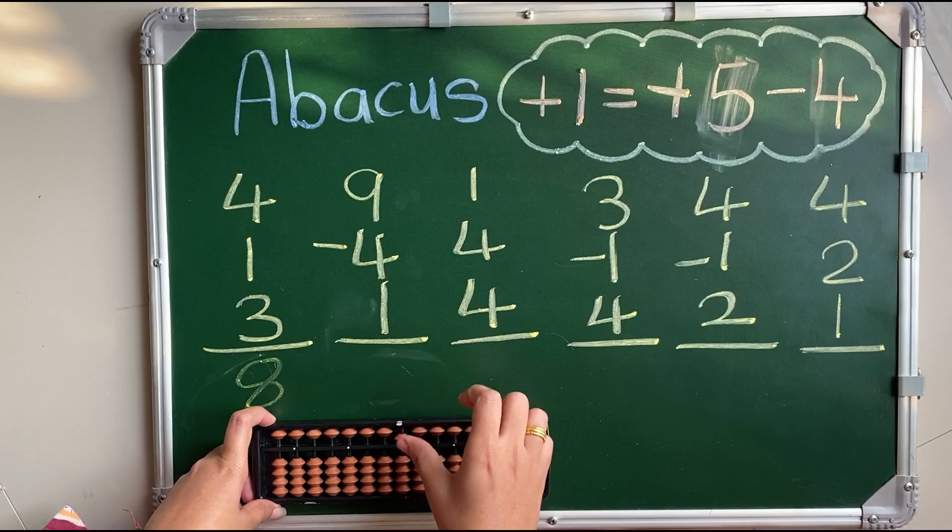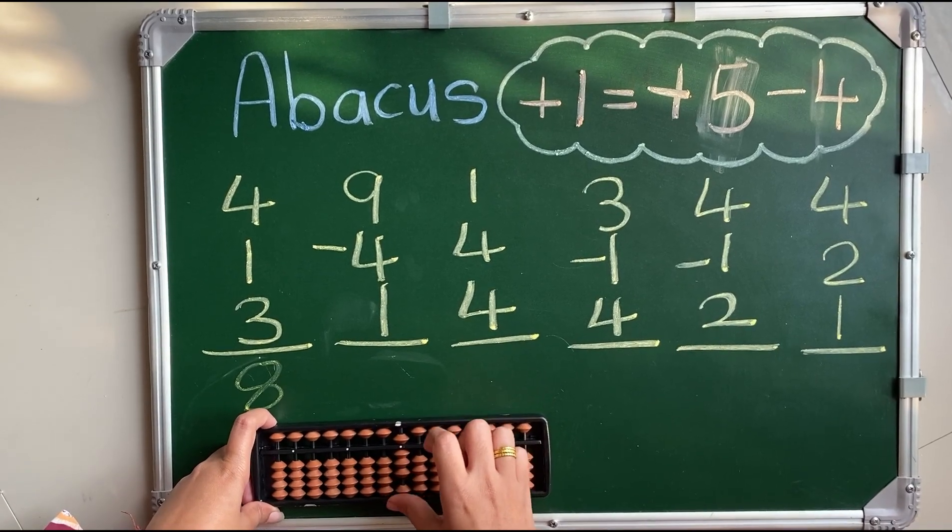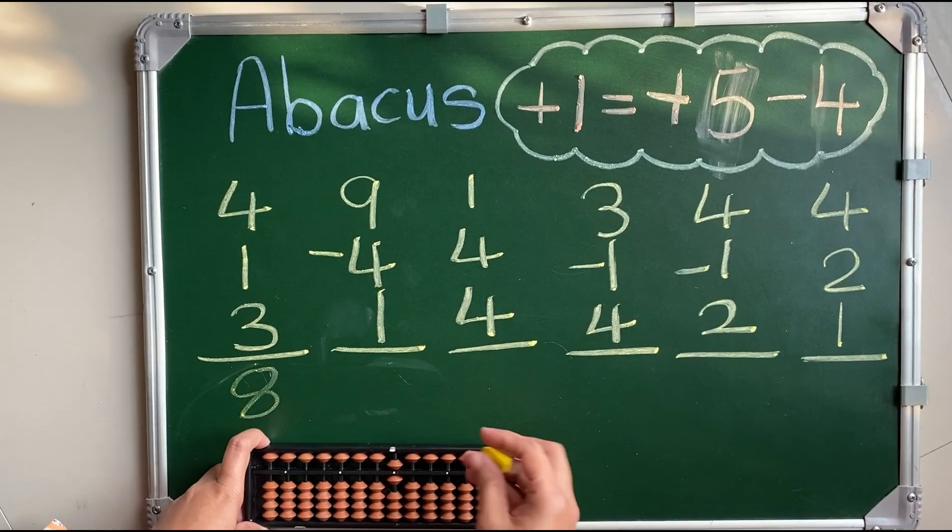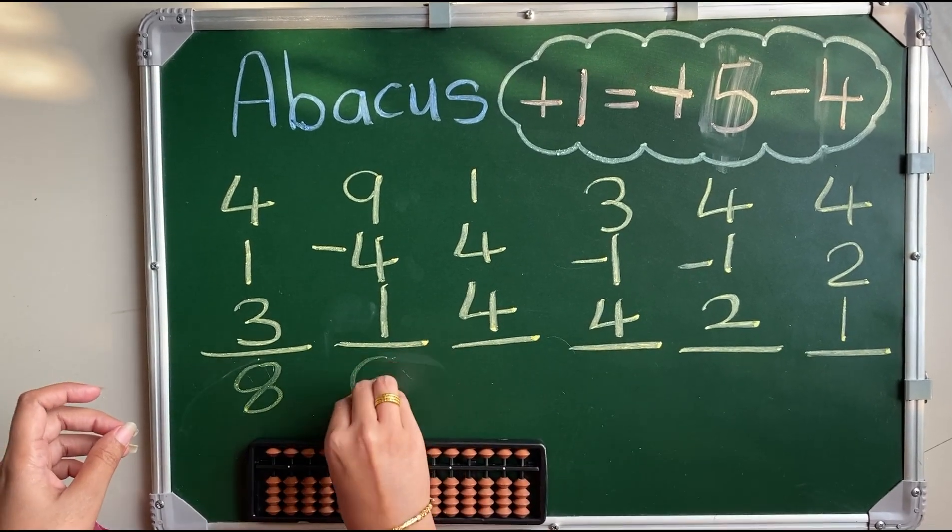9, 5, 6, 7, 8, 9 minus 4 plus 1. Answer is 6.